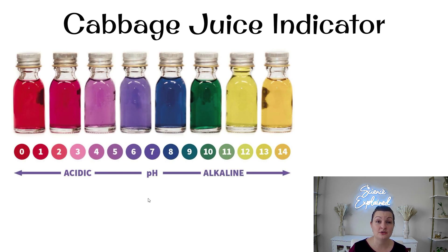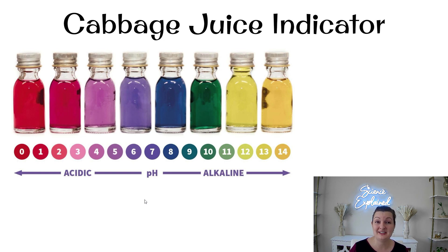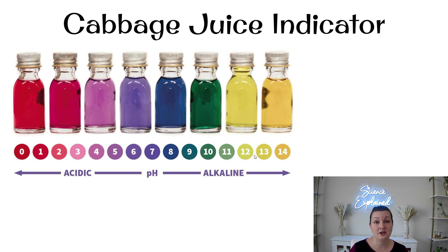Another indicator is our natural indicator — cabbage juice indicator. You can make this yourself at home. It's very safe to handle because it is just made with cabbage juice. You can see the range of colors it will turn when you pour it into a substance, and it coincides with the pH scale. I also have a video where I tested lots of substances with the cabbage juice, and I'll link that one in the description below as well.